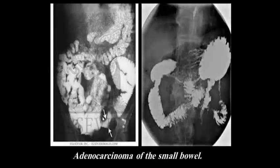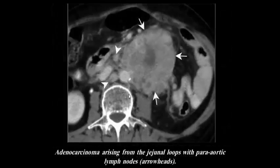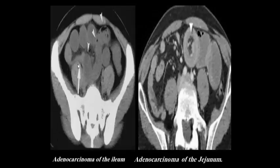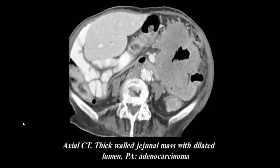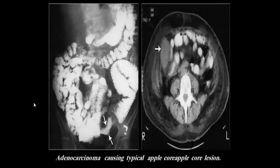Adenocarcinoma of the small bowel shows irregular structures, abrupt transitions, destruction of the mucosa. Adenocarcinoma arising from the duodenum with para-aortic lymph nodes shows a large mass with heterogeneous enhancement and areas of cystic degeneration and low attenuation. Adenocarcinoma of the ileum and duodenum shows sinking and irregularity of the wall, with axial CT demonstrating a thickened duodenal mass with dilated lumen. Adenocarcinoma causes a typical apple-core appearance with shouldering, irregularity, and destruction of the mucosa.